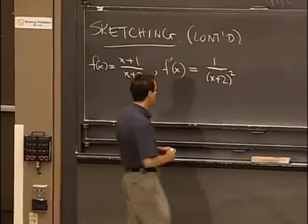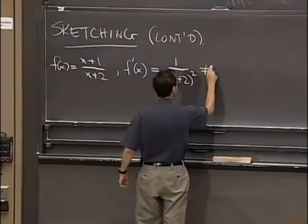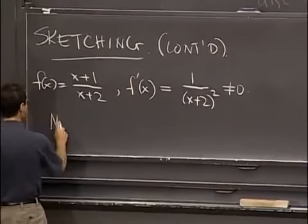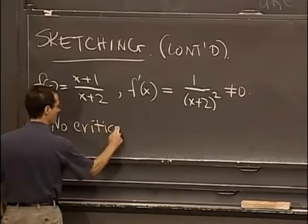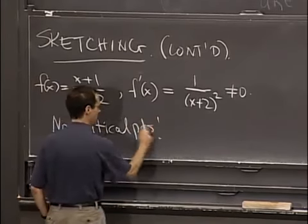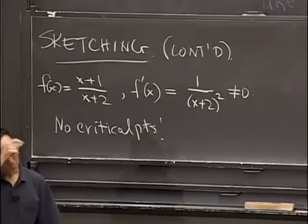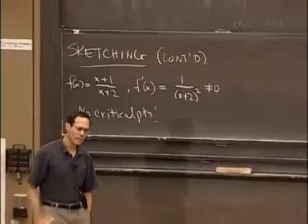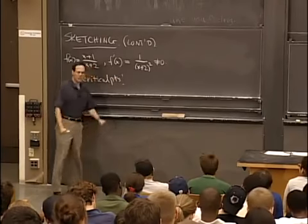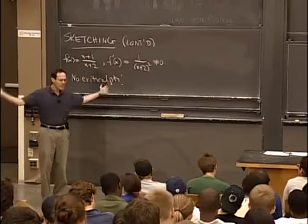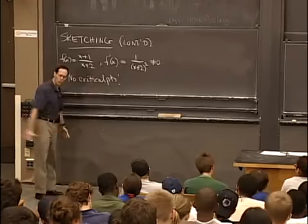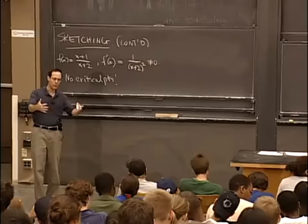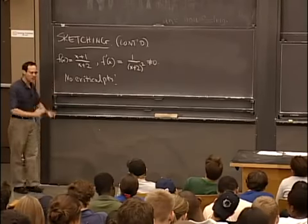So let me just show you. This is not equal to 0 — it's never equal to 0. So that means there are no critical points. At this point, many students who have been trained to do exactly what they've been told suddenly freeze and give up, because there's nothing to do. So this is the one thing that I have to train out of you. You can't just give up at this point.